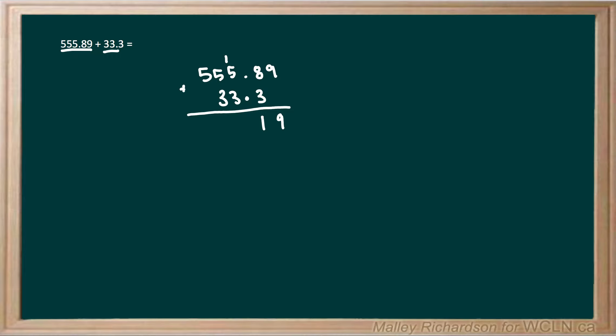Now we have our decimal. We always carry our decimal down directly below, so we have our decimal right there. And then we move on to 5 plus 3. 5 plus 3 gives us 8, and then 8 plus the 1 we carried gives us 9. So we bring our 9 down here.